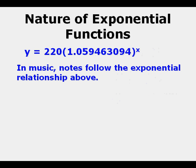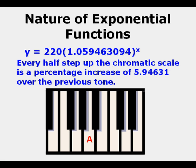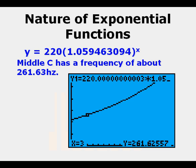In music, notes follow the exponential relationship above. A below middle C is 220 Hz or cycles per second. Every half step up the chromatic scale is a percentage increase of about 5.94631 over the previous tone. Middle C has a frequency of about 261.63 Hz. Here is that point marked on the graph.